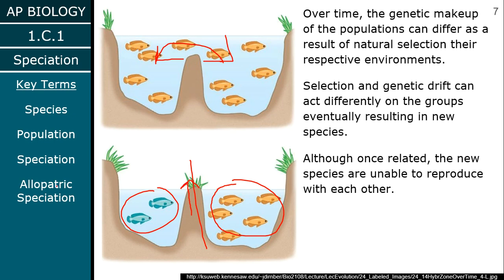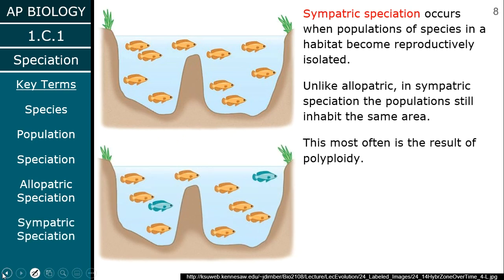Once that barrier forms, selection and genetic drift act differently on these populations. Maybe one side gets more sunlight allowing certain plant types to grow, or maybe predators end up on one side but not the other, making certain coloration better on one side. On the smaller population, random mutations causing color changes and the random chance of those changes being passed on have a larger effect — that's genetic drift. Any of these things can affect populations differentially when they differ in size and no longer have gene flow between them.